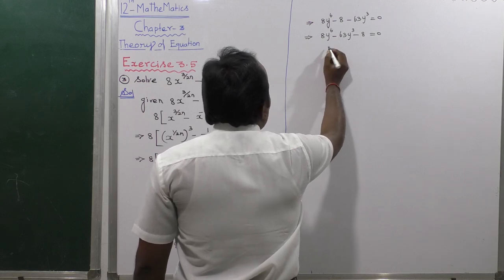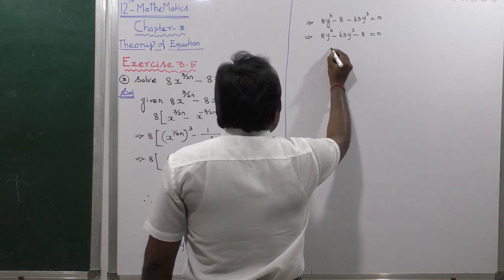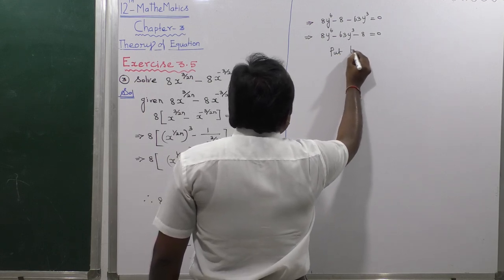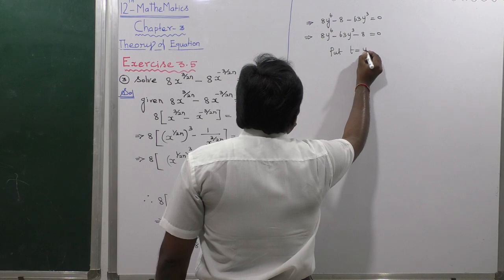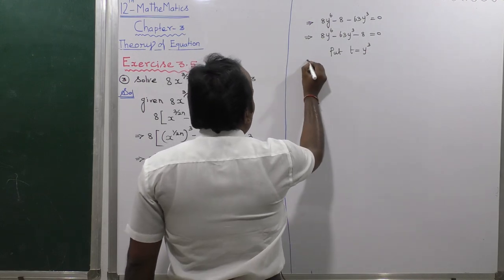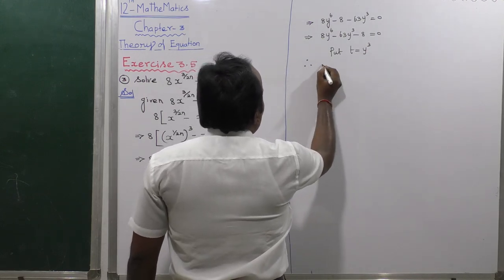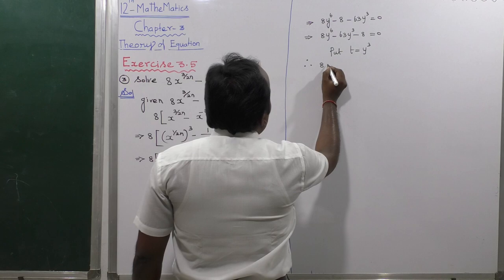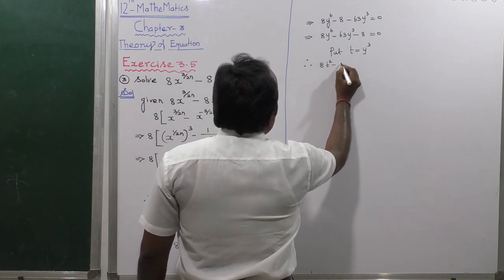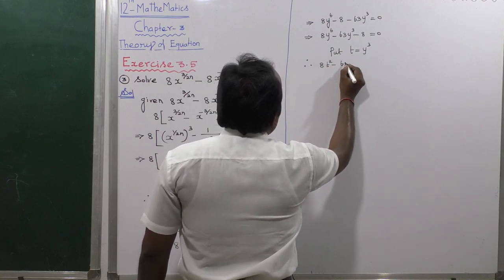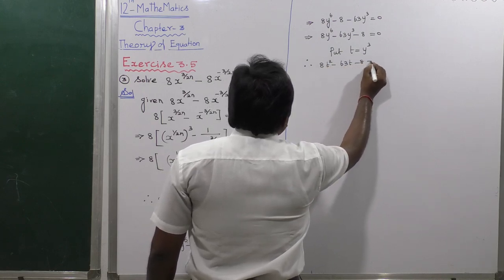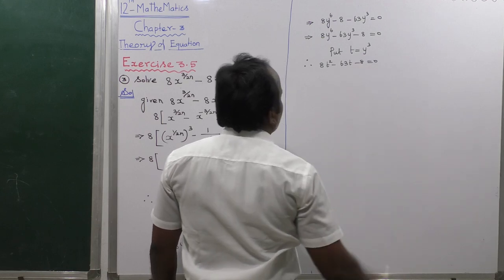We replace the values to reduce the power: put t equal to y cubed. Therefore, 8t squared minus 63t minus 8 is equal to 0.